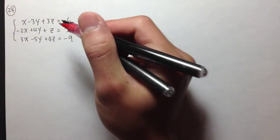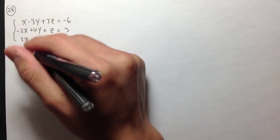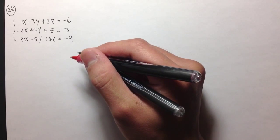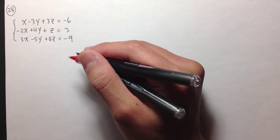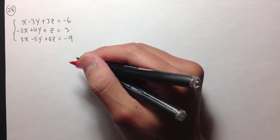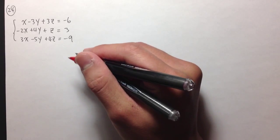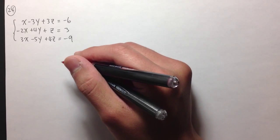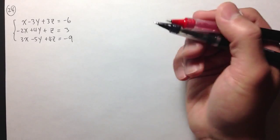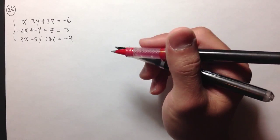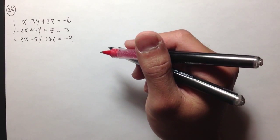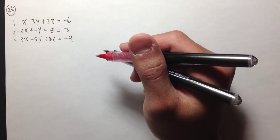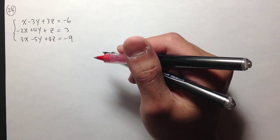Last question. We are going to solve this 3x3 system of equations. In this video, I will first show you how to use the addition method to solve for x, y, and z. And in the next video, I will go over how to use Cramer's rule to solve for all three variables.